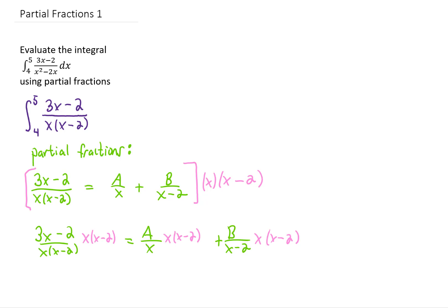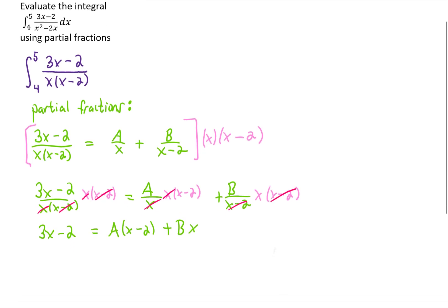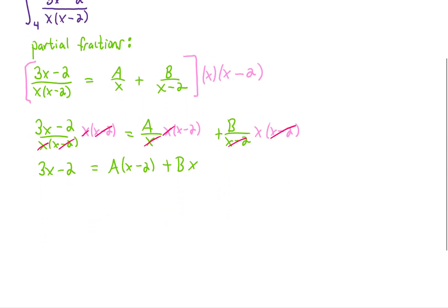If we multiply every single term by x times x minus 2, you'll notice we get a lot of cancellations. What we're left with is 3x minus 2 equals A times x minus 2 plus B times x. And there are multiple ways to go about finding A and B here. Since this line has to be true for all x values, one technique we can use is choosing a specific x value that's going to allow us to solve for A and B.